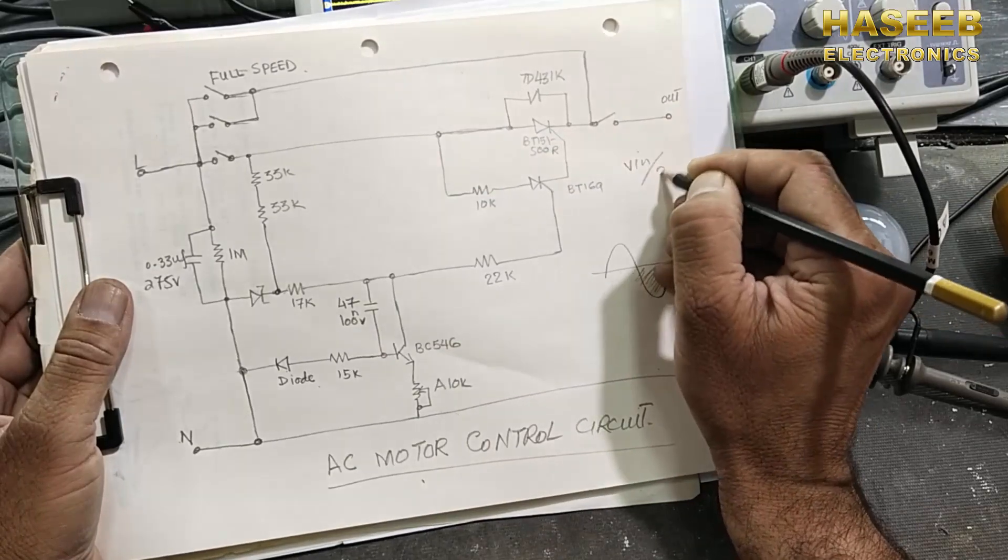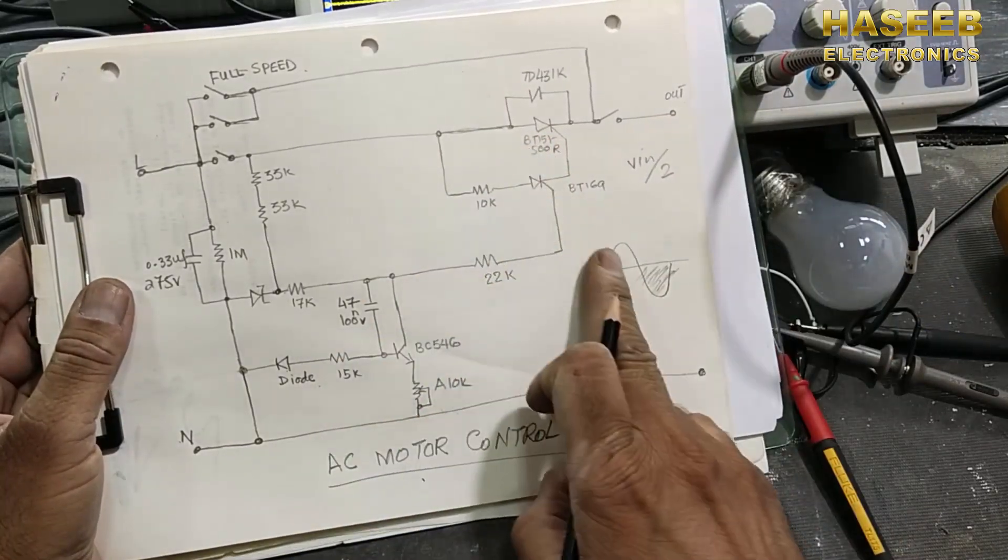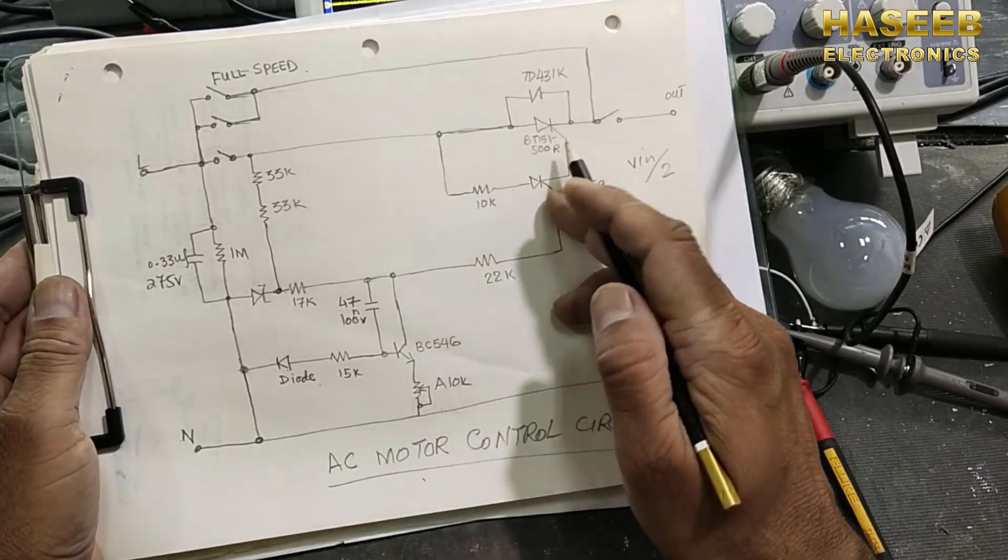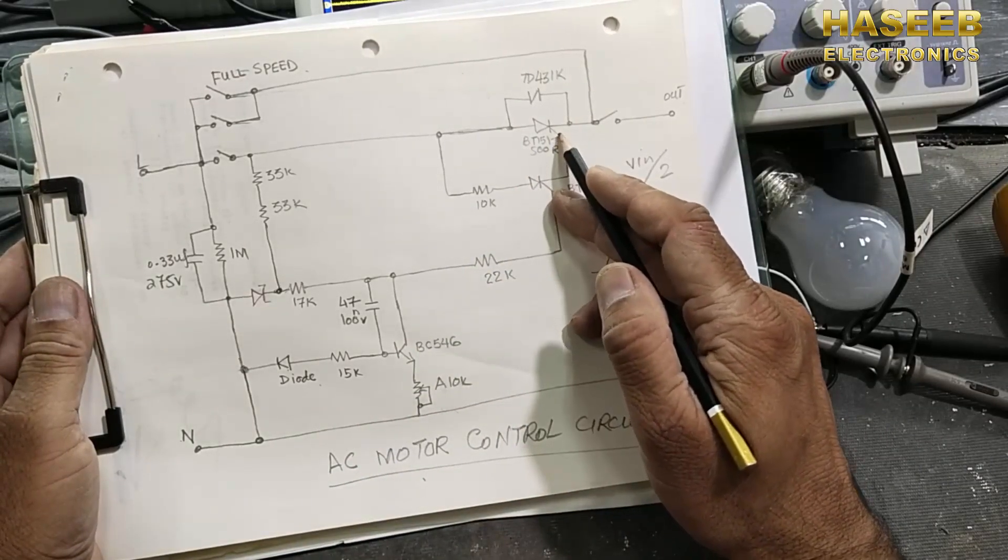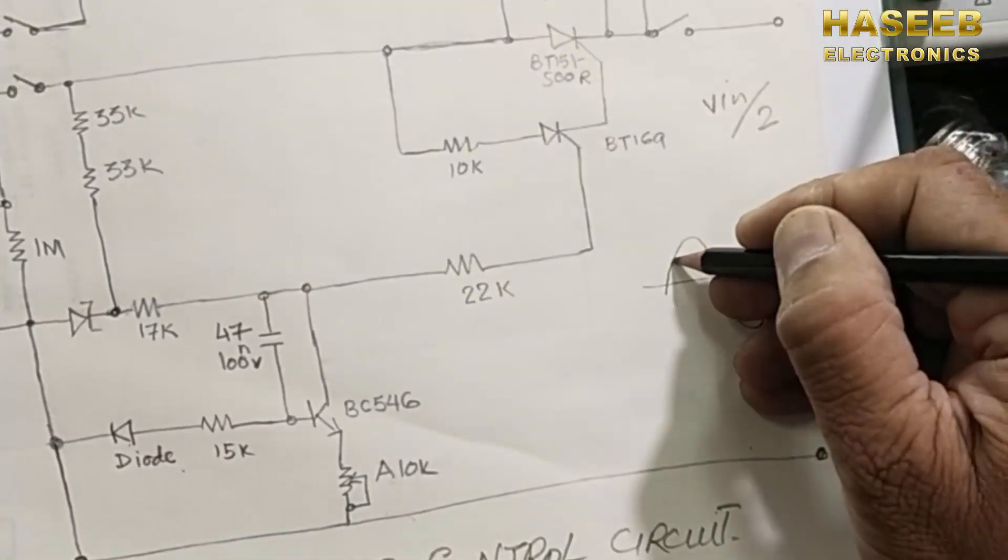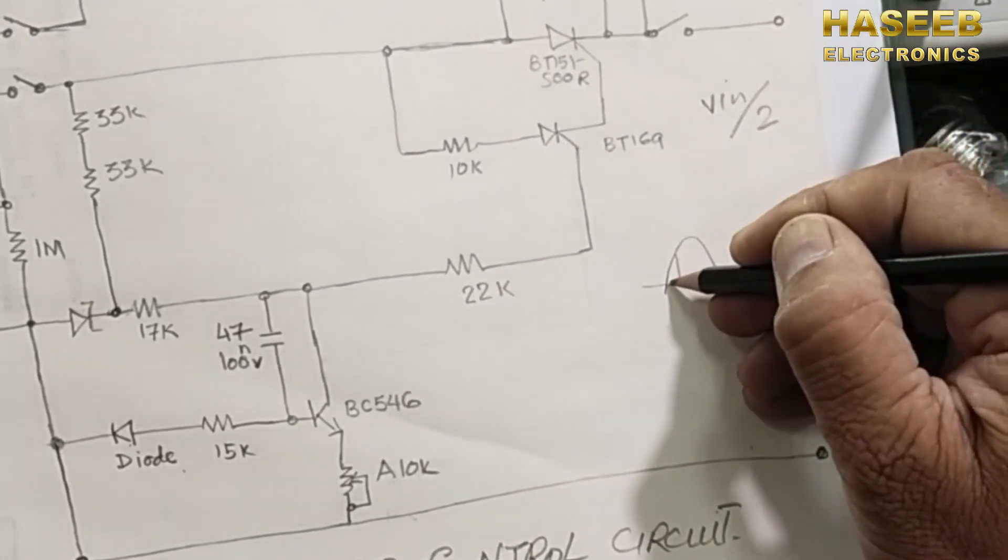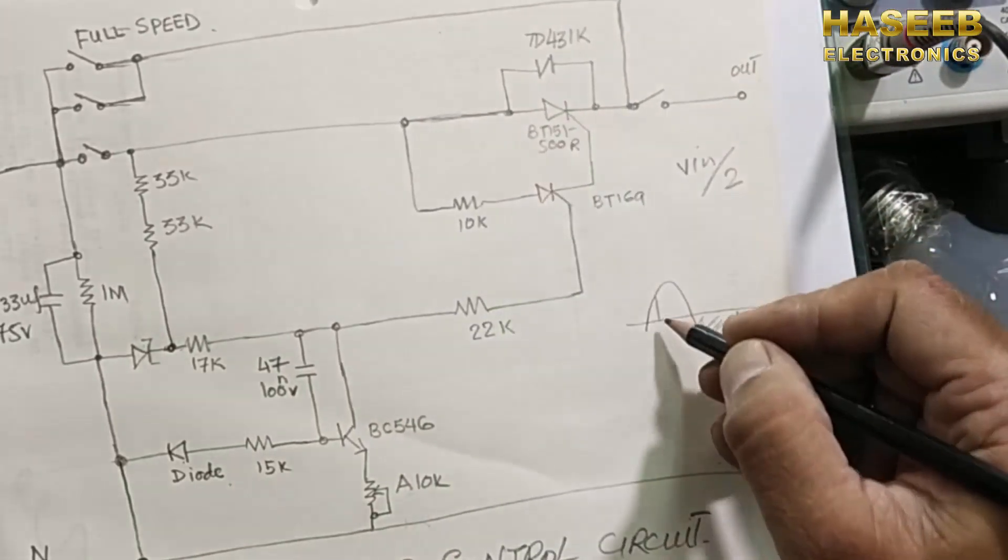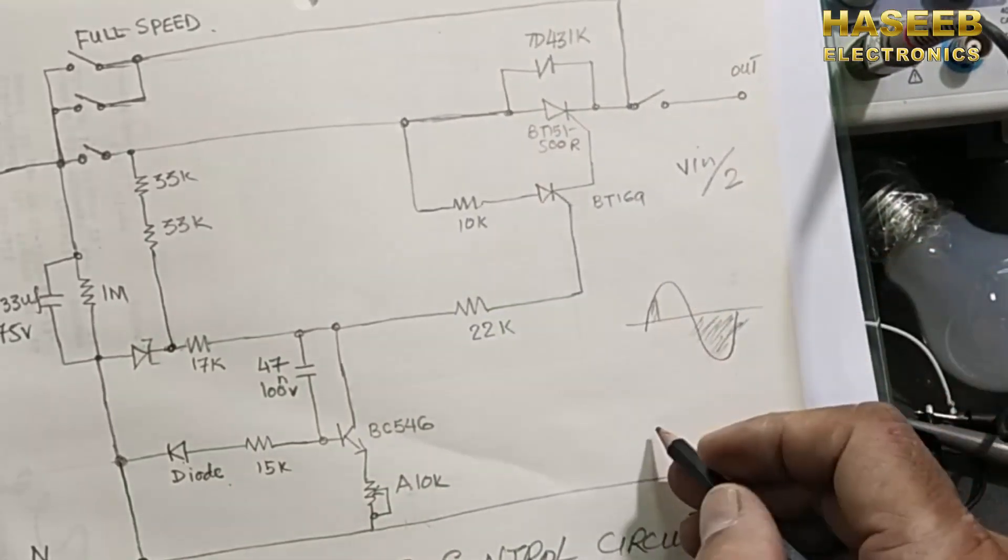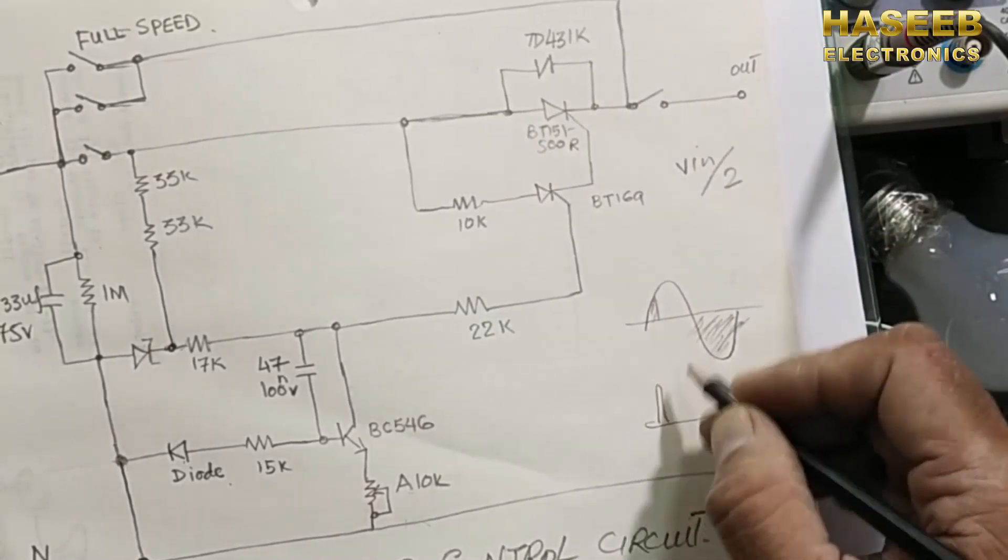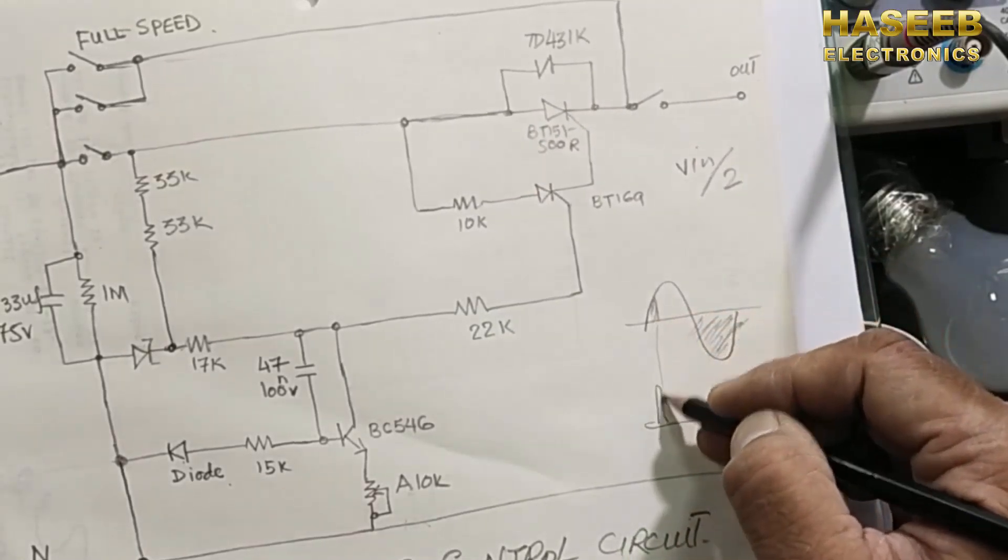Second thing, then we are controlling the conduction of this SCR. If we set to minimum level, we will just only allow to conduct this SCR for this time. So in the output we are taking just only this peak. That is here.